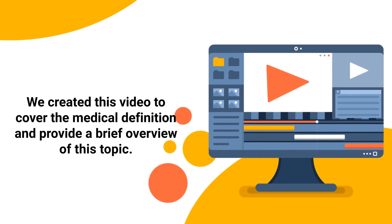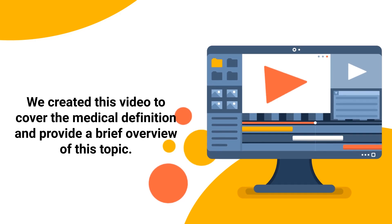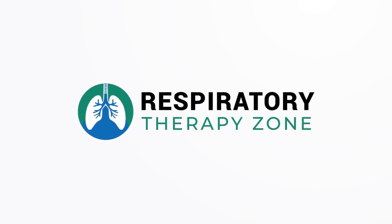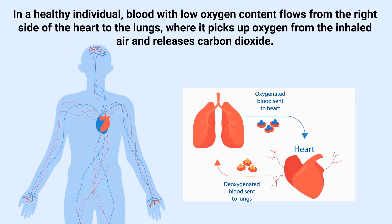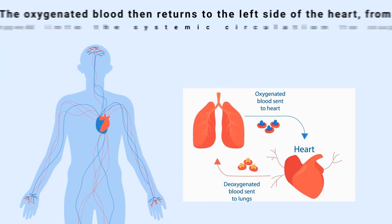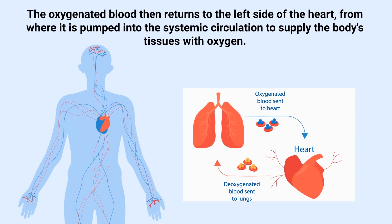We created this video to cover the medical definition and provide a brief overview of this topic. In a healthy individual, blood with low oxygen content flows from the right side of the heart to the lungs, where it picks up oxygen from the inhaled air and releases carbon dioxide. The oxygenated blood then returns to the left side of the heart, from where it is pumped into the systemic circulation to supply the body's tissues with oxygen.